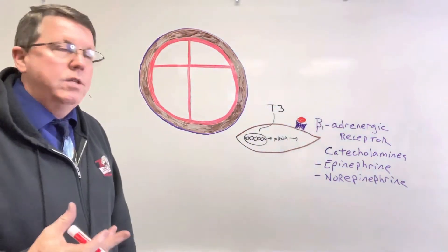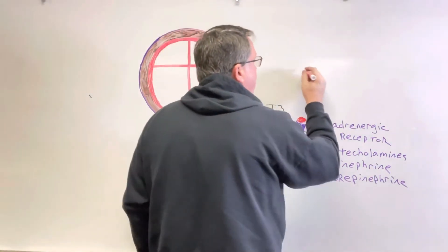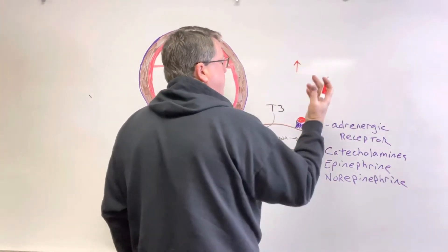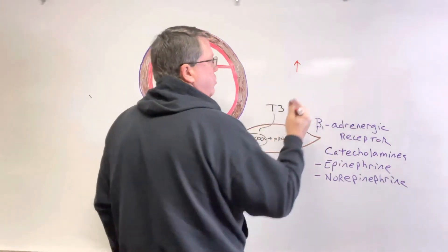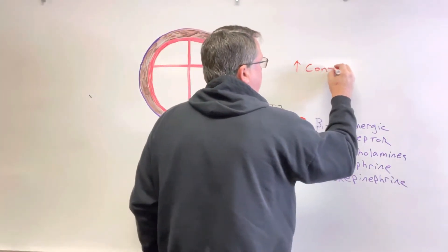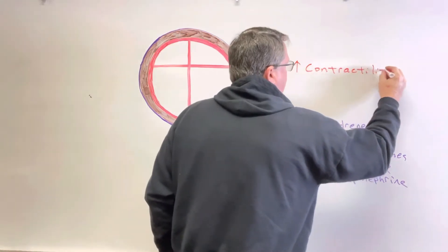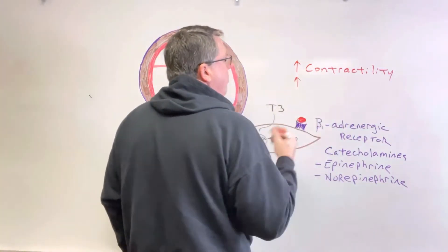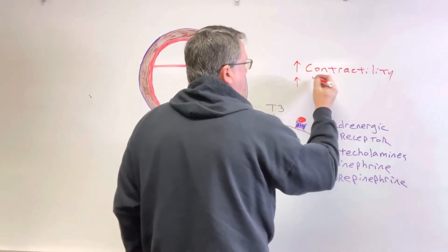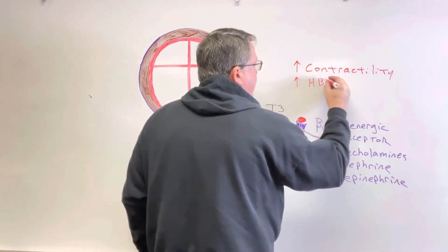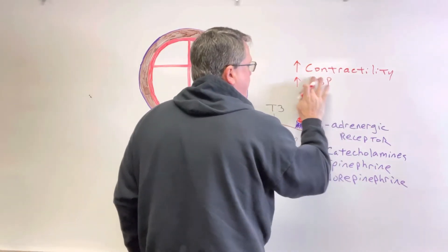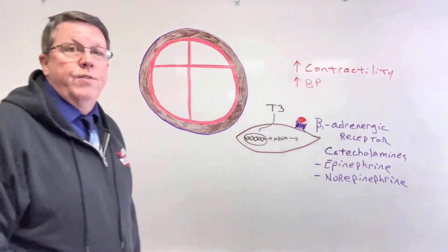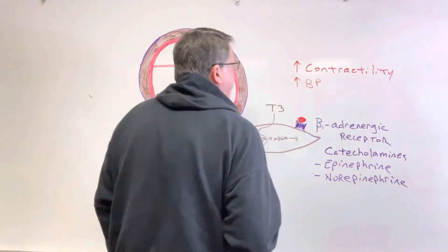And what that's going to do is a number of different things. It is going to increase the heart contractility — the force that the heart contracts with. It's also going to play a role in increasing the blood pressure. If you have too high or too low of thyroid hormone, you can actually get an increase in blood pressure.